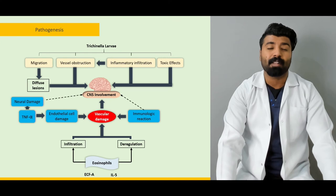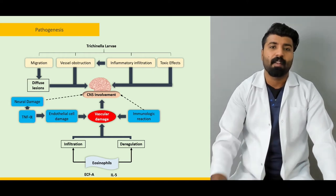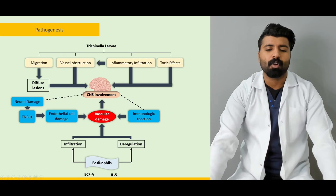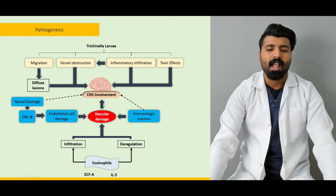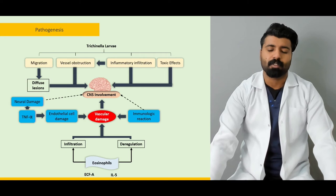Next, we're going to talk about the pathogenesis. We'll discuss how larval migration and the presence of larva in the body affects the CNS system, how larvae migrate and cause diffuse lesions, how vessels are obstructed, and how the body's own response leads to vascular damage and CNS involvement. We'll also talk about why patients with CNS involvement — approximately 16 to 20% of them — die because of it.